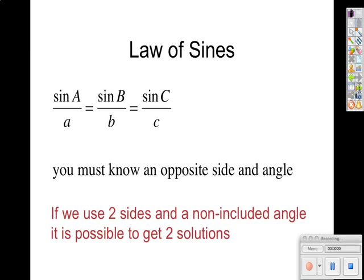And similarly to the area problem that we did in the last section, it is possible to get two solutions if we're using two sides and the non-included angle. It's possible to get two different triangles that have the same proportion of sine of the angle to the side. You just have to check that out as you're going through problems.